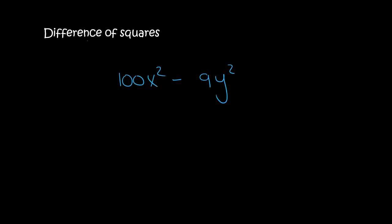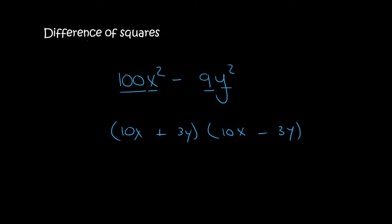Here, 10 times 10 gives 100 and x times x gives x², so the first term is (10x)². And 3 times 3 gives 9, y times y gives y², so the second term is (3y)². We open up two brackets: (10x + 3y)(10x - 3y).